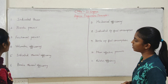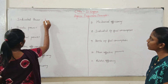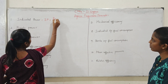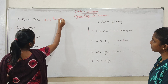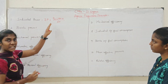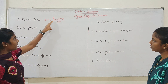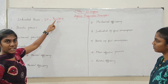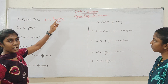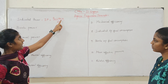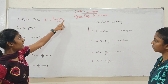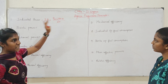First, Indicated Power. Indicated power, we will denote as IP. IP is equal to PM into L into A into N into K, divided by 60. PM is the actual mean effective pressure, L is the length of stroke, A is the area of cross section of the cylinder, N is the speed of the engine crankshaft, and K is the number of cylinders.